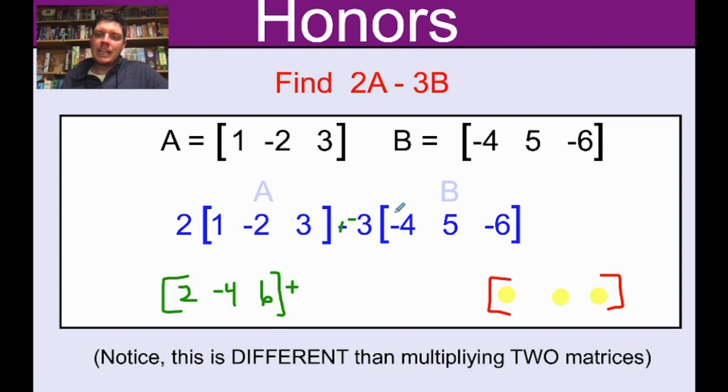Let's scale matrix B by a factor of negative 3. Negative 3 times negative 4 is positive 12, negative 3 times 5 is negative 15, and then negative 3 times negative 6 is positive 18. Now if you had just scaled by a factor of 3, this would be negative 12, positive 15, and negative 18, and then you would need to subtract the two matrices. But by making this little change here, it's super easy for me because now I can just add: 2 plus 12 is 14, negative 4 plus negative 15 is negative 19, and 6 plus 18 is 24. So 2A minus 3B in this example would give us the matrix 14, negative 19, and 24.